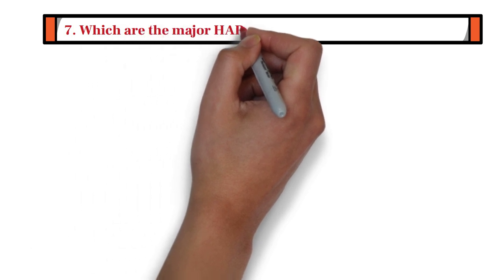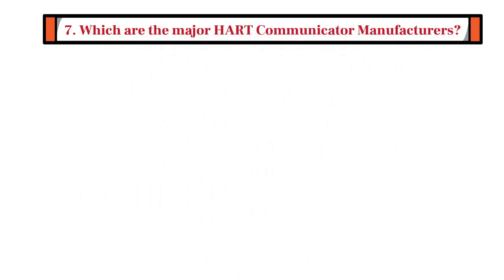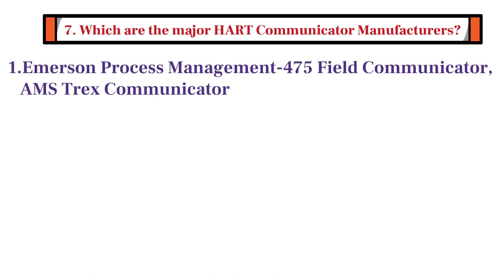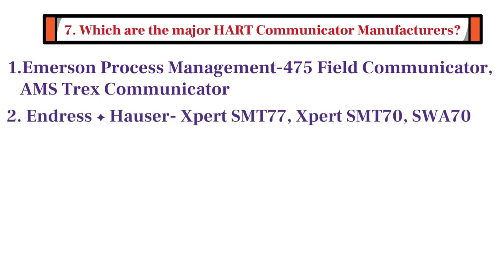Last question is, which are the major HART communicator manufacturers? Emerson Process Management is one of the major manufacturers of HART communicator. Emerson's Model 475 Field Communicator and AMS Trex Communicator are very popular. Secondly, Endress & Hauser is also one of the major manufacturers of HART communicator. Endress & Hauser's Model Expert SMT-77, Expert SMT-70, SWA-70 are very popular. Yokogawa is also one of the manufacturers of HART communicator. And Fluke is also one of the manufacturers of HART communicator.